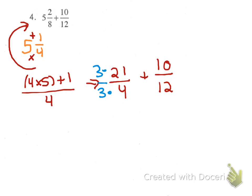So, we take 3 times 21 and we get 63 on the top over 12 plus 10 over 12. That gives us 73 over 12.